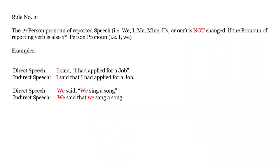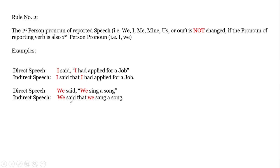Rule number two: the first person pronouns of reported speech — we, me, I — are NOT changed if the pronoun of the reporting verb subject is also first person. Example: 'I said, I had applied for a job.' Indirect speech: 'I said that I had applied for a job.' The 'I' remains the same since both are first person. Next: 'We said, we sing a song.' Indirect speech: 'We said that we sang a song.' Simple present becomes simple past — 'sing' becomes 'sang.'